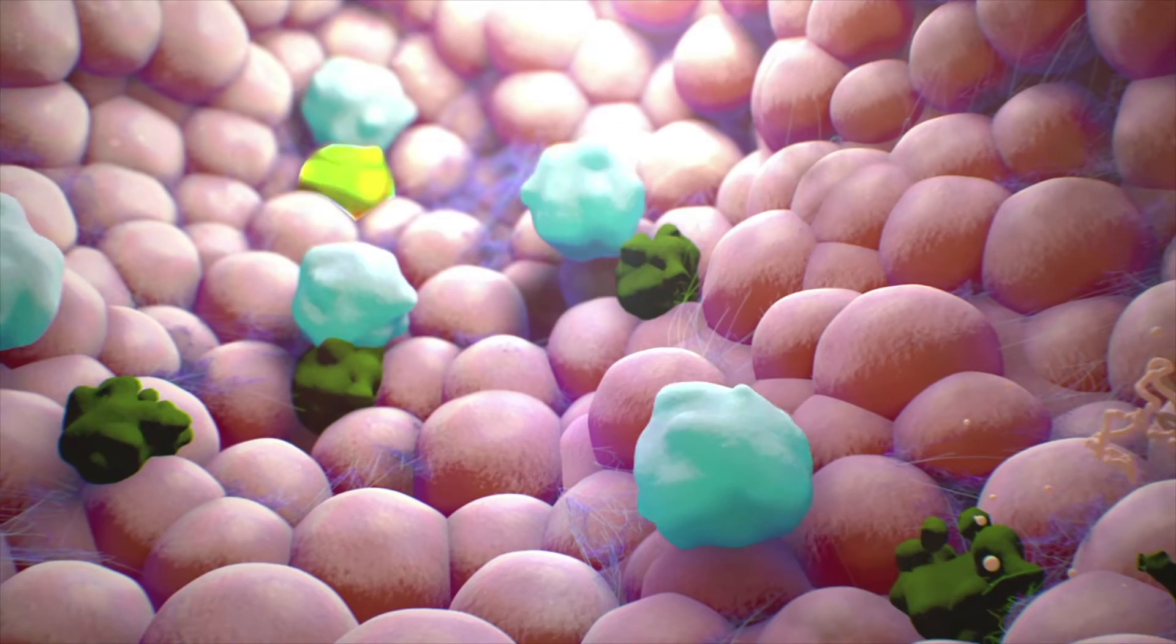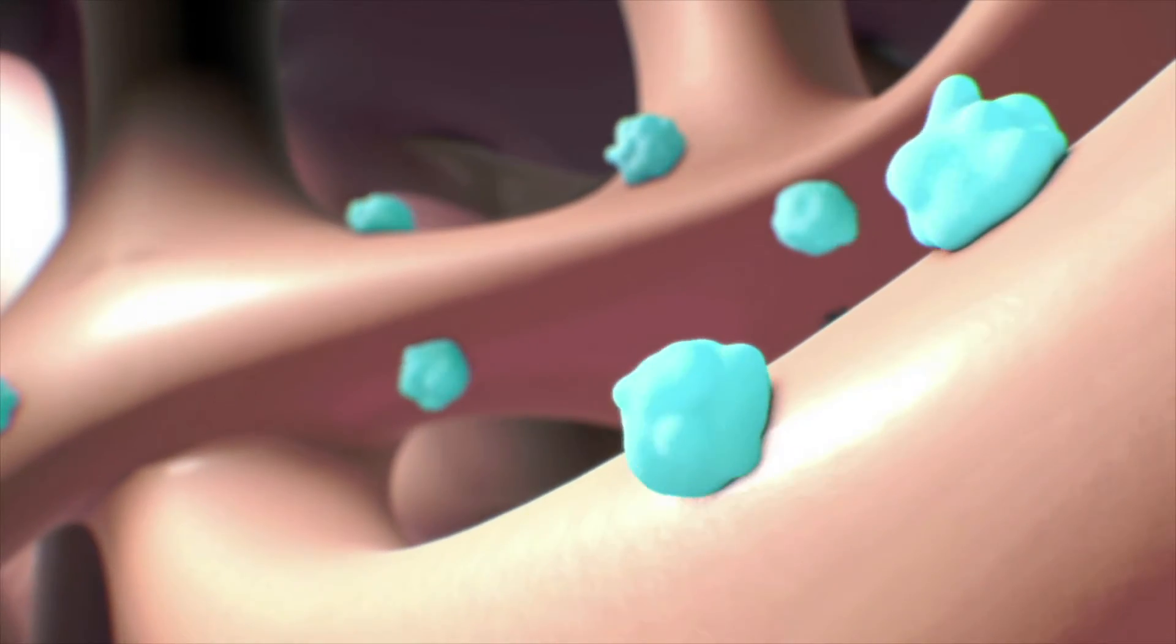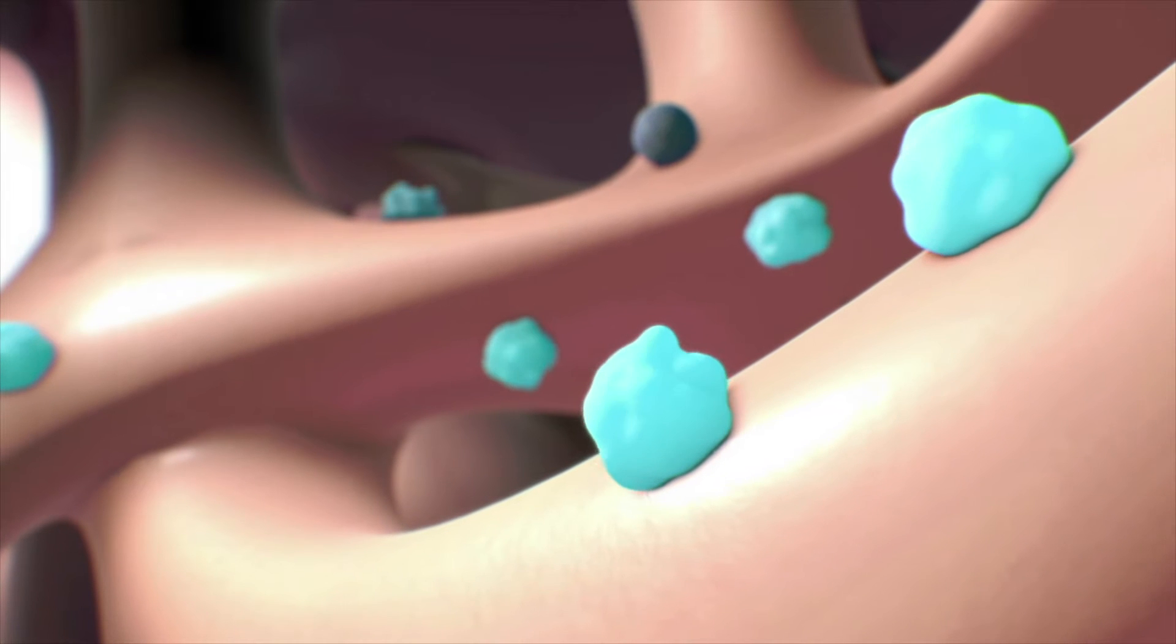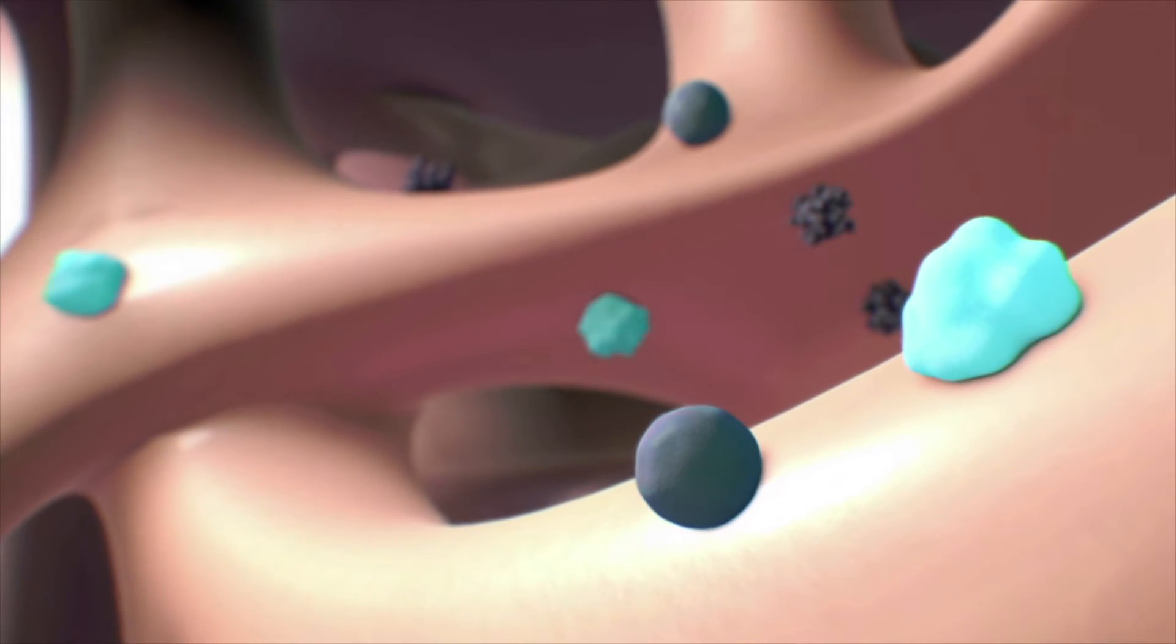Once the cytotoxic T cells have fought back against their targets, the majority of them die, with a few returning to a dormant state to maintain the memory of the threat.